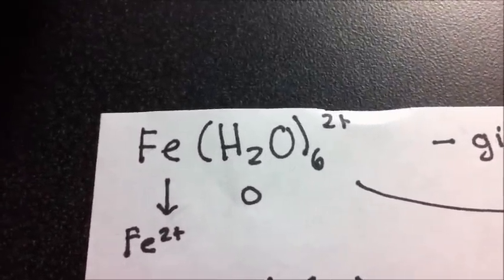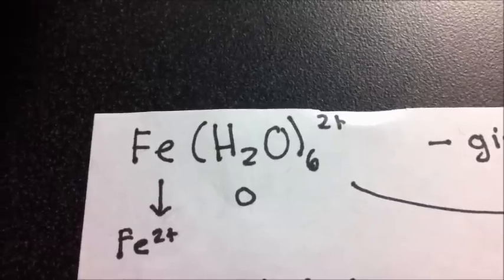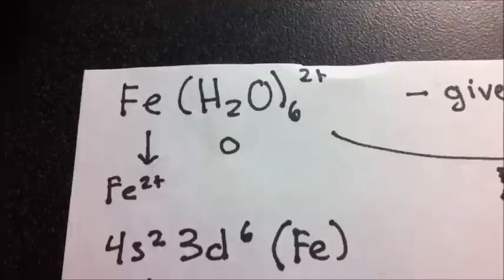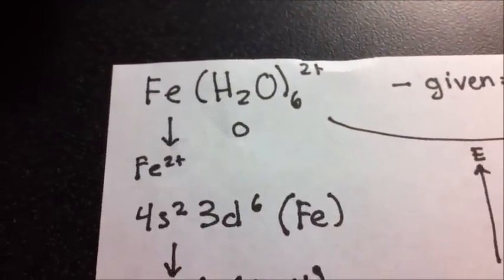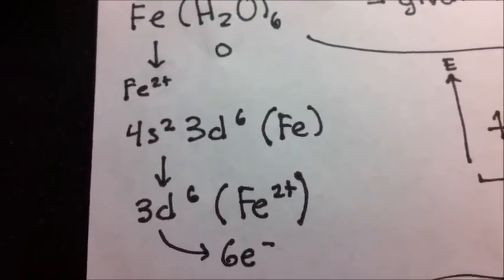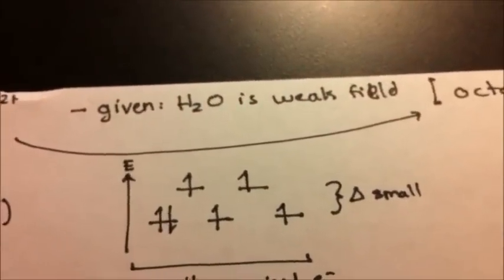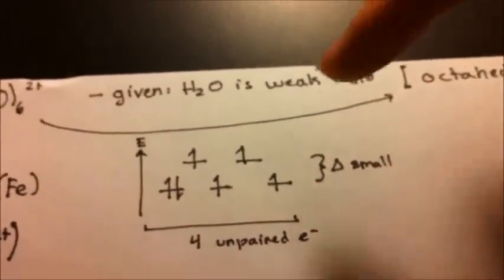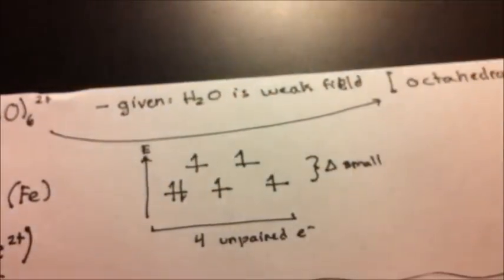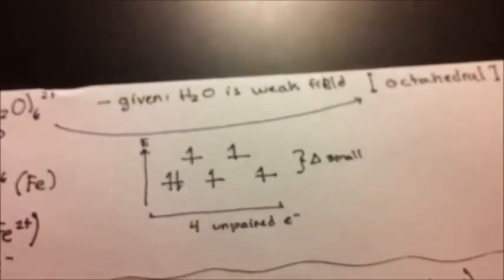For FeH₂O₆, we can deduce it's octahedral based on the 6 ligands. H₂O is neutral, so it has a charge of 0. In order to have an overall plus 2 charge, the iron oxidation state will also be plus 2. From the periodic table, iron is 4s², 3d⁶. Removing two electrons gives us 3d⁶ — six electrons to fill in. Because H₂O is a weak field ligand, we can access the higher orbitals without filling the lower three first. Filling in 6 electrons: 1, 2, 3, 4, 5, 6 — giving us 4 unpaired electrons total.